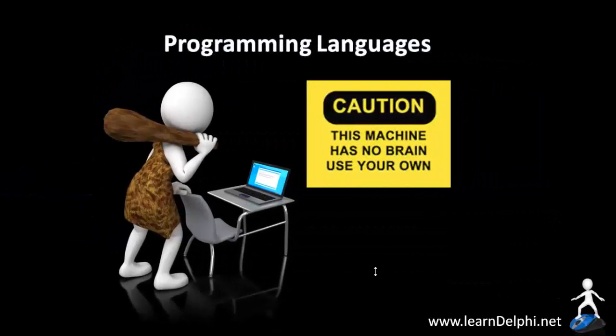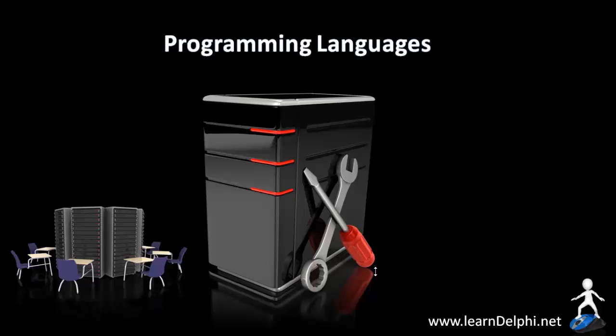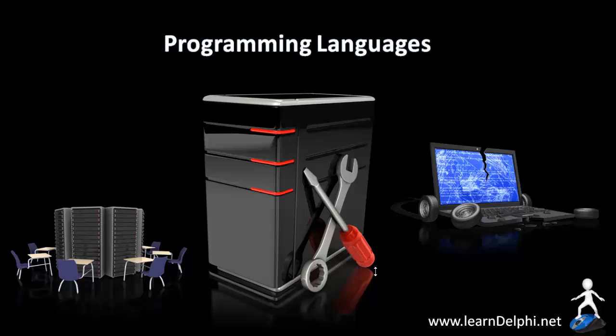Computer programming is a way to tell one of the dumbest objects, a computer, to do smart things. Yes, you heard right — a computer is not clever. It is just a box full of cables and machine-made components, just like a table or chair. It can't think and it can't talk. In fact, it can do nothing without a programmer.